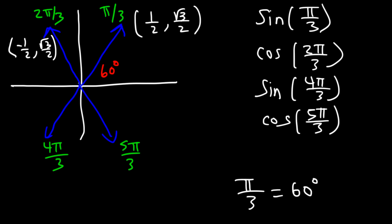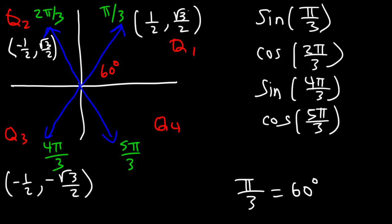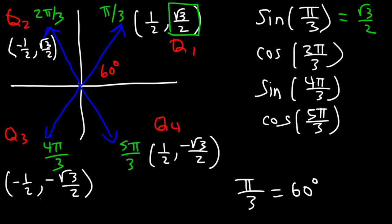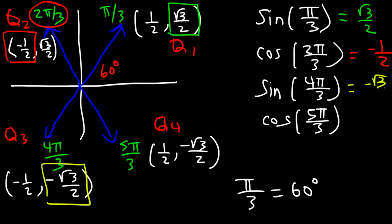The x values are negative in quadrants 2 and 3, and y is negative in quadrants 3 and 4. In quadrant 3, both x and y are negative: negative 1 half, negative root 3 over 2. In quadrant 4, x is positive but y is negative. So: sine pi over 3 equals square root of 3 divided by 2; cosine 2 pi over 3 equals negative 1 half; sine 4 pi over 3 equals negative root 3 divided by 2; and cosine 5 pi over 3 equals positive 1 half.